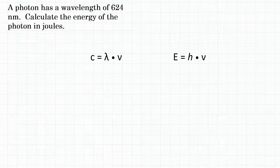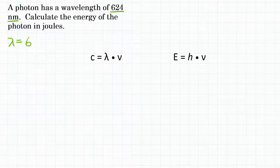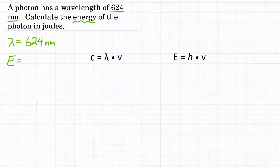The problem states that a photon has a wavelength of 624 nanometers. Calculate the energy of the photon in joules. So the problem is giving us wavelength — 624 nanometers — and asking for energy, denoted as capital E. That's what we're looking for.